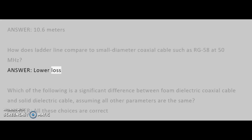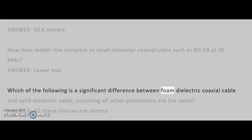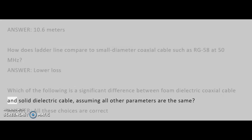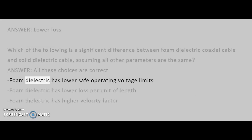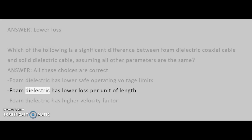How does ladder line compare to small diameter coaxial cable such as RG-58 at 50 MHz? Answer: Lower loss. Which of the following is a significant difference between foam dielectric coaxial cable and solid dielectric cable, assuming all other parameters are the same?